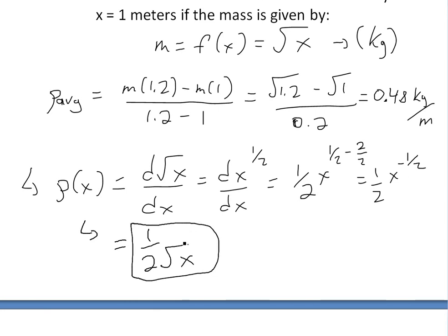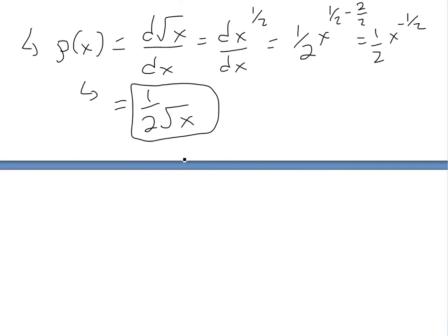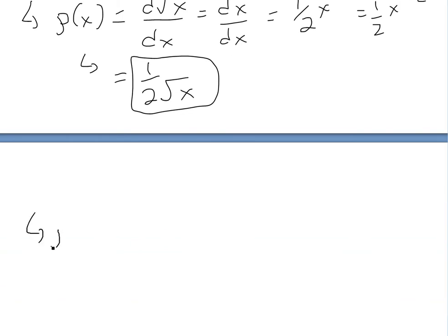Now if we want to find at 1, so density at 1, we just plug that in. 1 over 2 square root 1, square root 1 is 1, so we'll have 1 over 2, or 0.50 kg per meter.